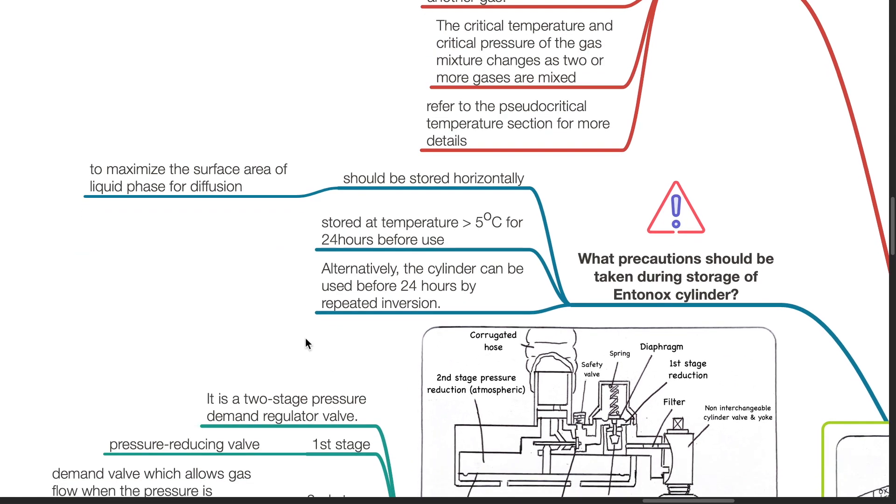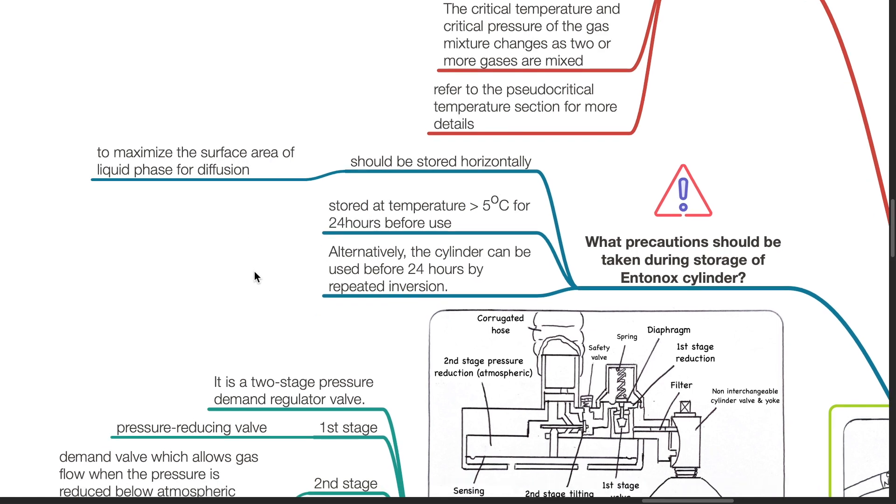What are the precautions during storage of an Entonox cylinder? It should be stored horizontally to maximize the surface area of liquid phase for diffusion. Entonox cylinders should be stored at a temperature above 5 degrees Celsius for 24 hours before use. Alternatively, the cylinder can be used before 24 hours by repeated inversion.